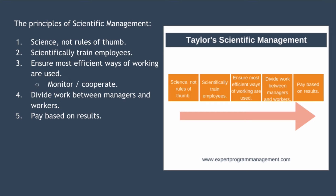The first principle of scientific management is science, not rules of thumb. Rather than doing things how they've always been done, Taylor wanted each job to be studied scientifically in order to identify the most efficient way to do it. Taylor advocated using time and motion studies as the way to do this, which often involved looking at the most efficient workers to identify why they were being so efficient. The ultimate aim was to describe the job in a repeatable way so that everyone in the organisation doing that job can be trained to do it in the most efficient way.